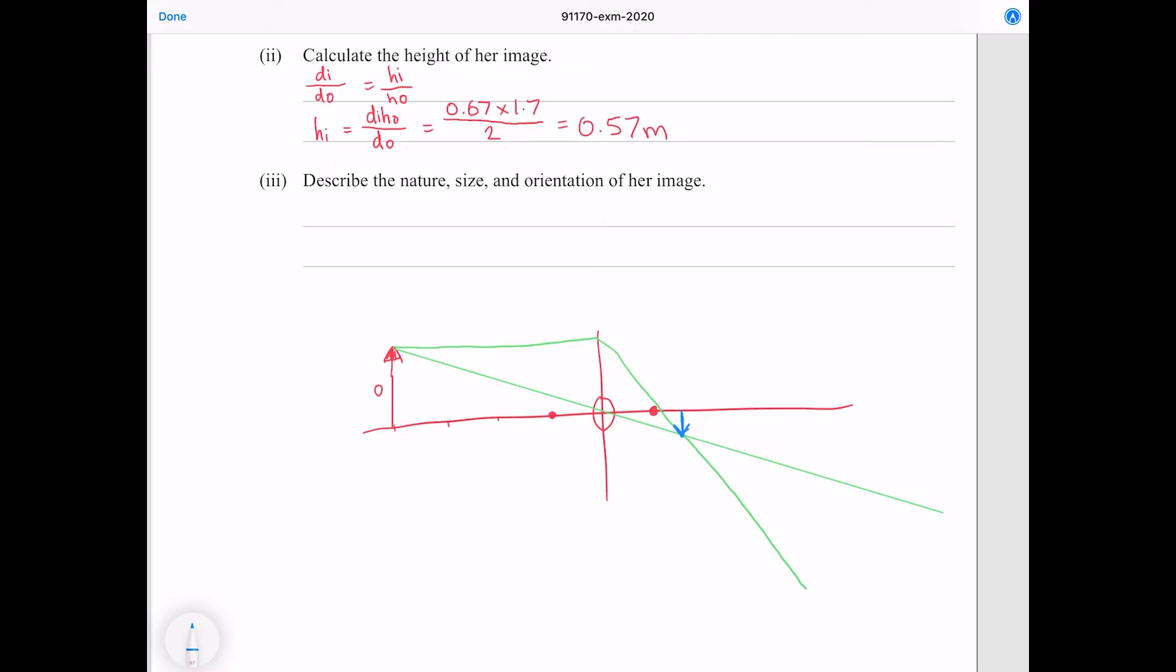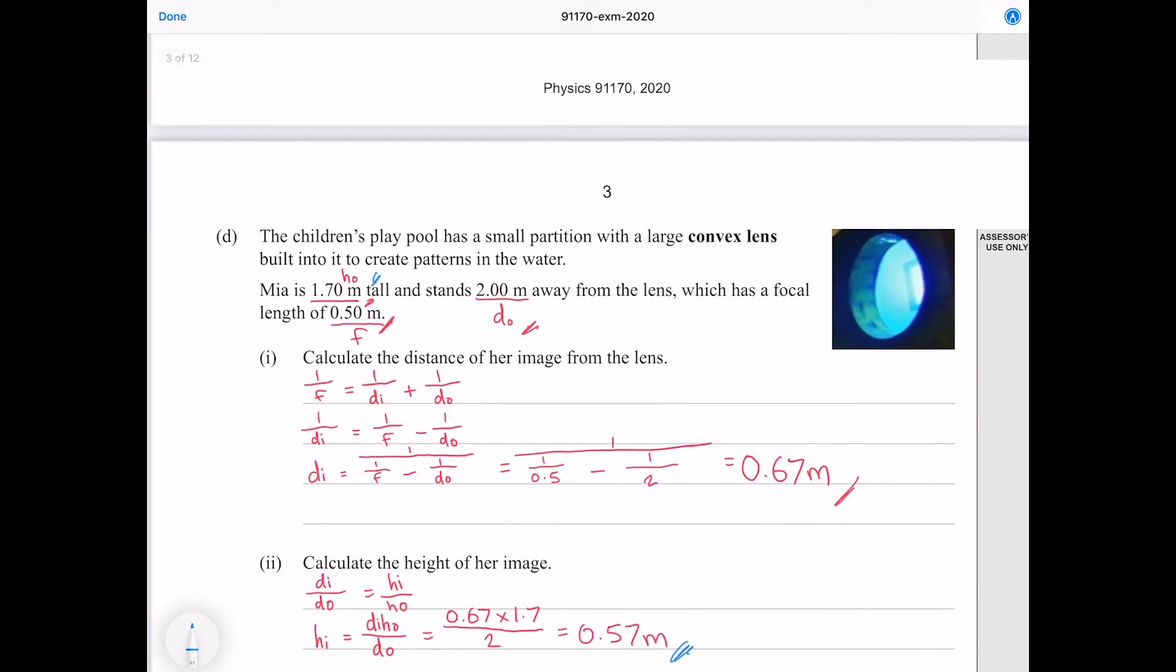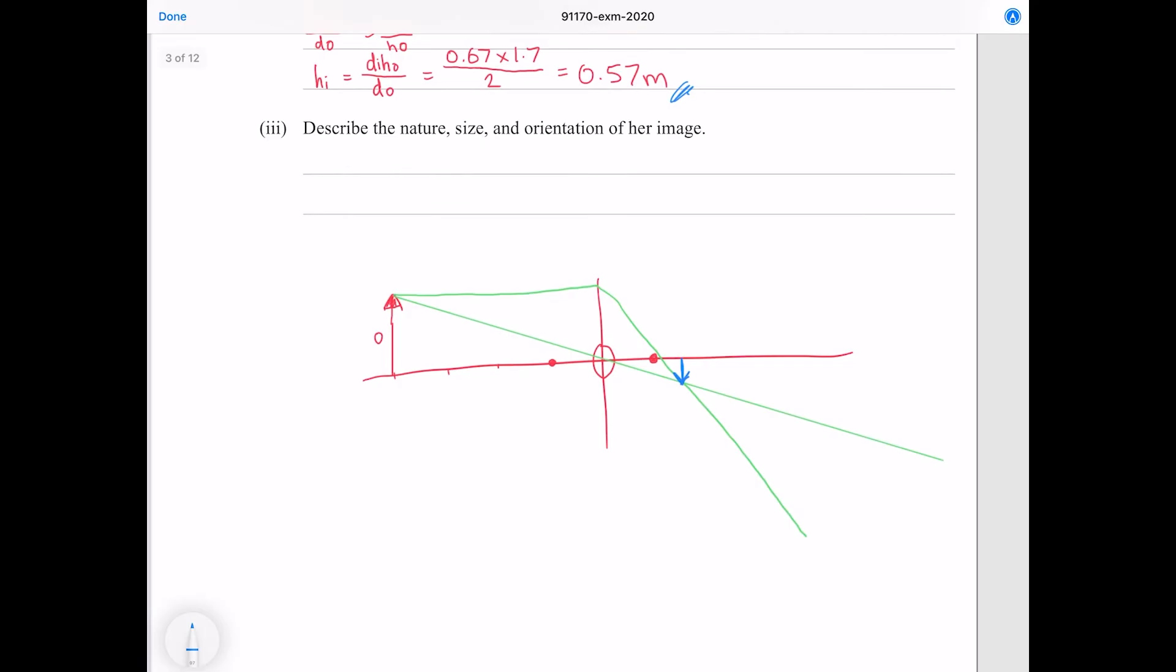We found that the height of the image is 0.57 compared with the object which is 1.7. We see that it's inverted and we also see that it's real. So doing a quick ray diagram can be a super efficient way of answering these questions if you're unable to remember the exact properties of how each lens works.